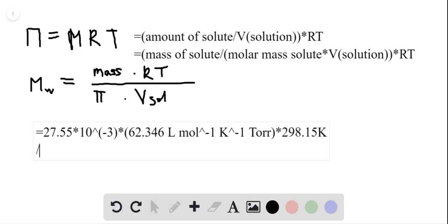And we divide this whole thing by our osmotic pressure in Torr, which is at 3.22 Torr. And we divide that by the polymer solution, which is given at 25 milliliters or 25 times 10 to the power of minus 3, and this is liters.